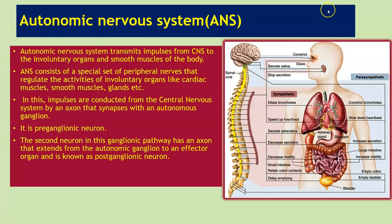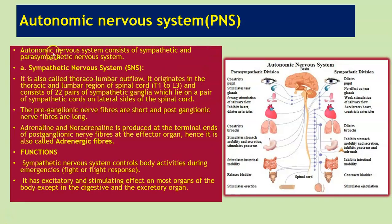Have a look at this image here. This shows the control of the autonomic nervous system, highlighting the sympathetic and the parasympathetic nervous system. The autonomic nervous system consists of these two divisions.